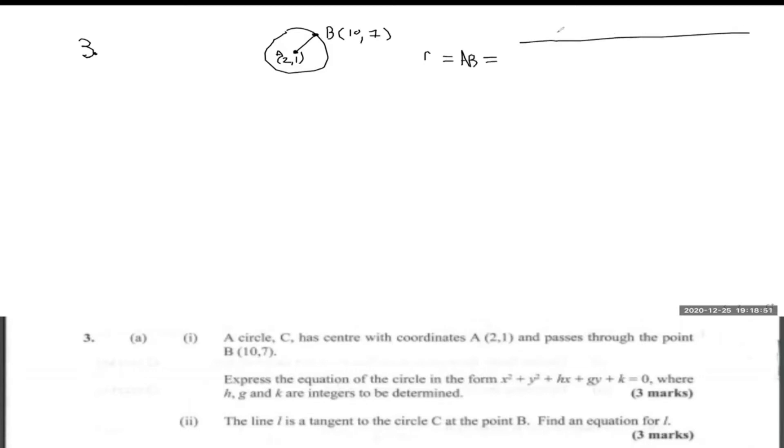So (10, 7) would be somewhere up here - let's call this point B. Once they give you the center and a point on the circle, you clearly know the radius, since point B at (10, 7) lies on the circle. The radius is going to be equal to the distance AB. The distance AB equals the square root of (x1 minus x2) squared, so that's (10 minus 2) squared...